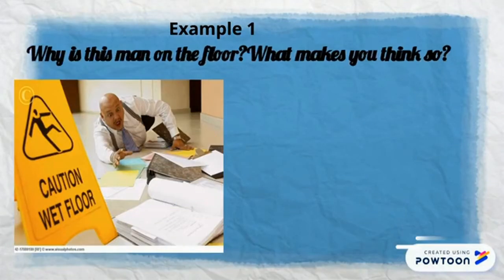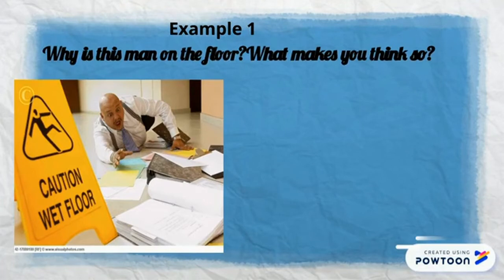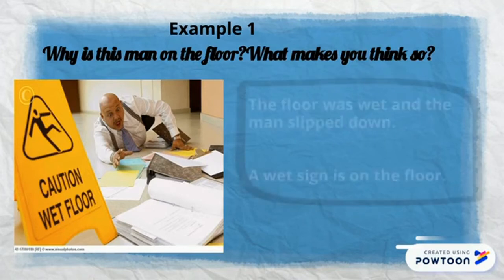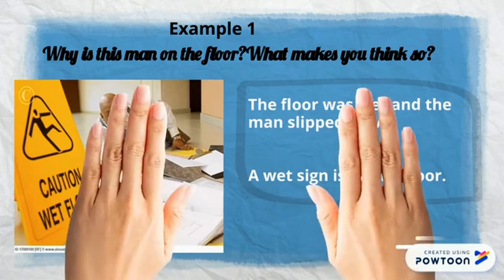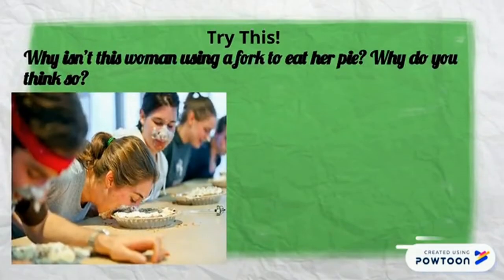Let us do one example together. Why is the man on the floor? What makes you think so? The floor was wet and the man slipped down. A wet sign is on the floor. Very good.